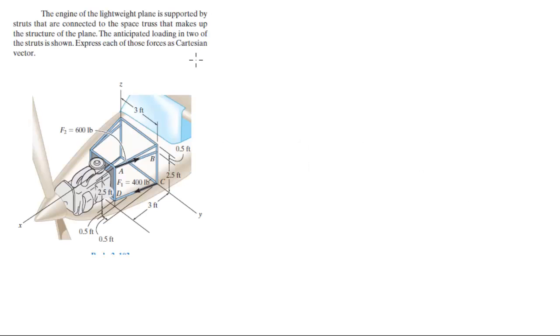For more videos visit ForTheSakeOfEducation.com. Alright guys, let's do this problem that says an engine of the lightweight plane is supported by the struts that are connected to the space truss that makes up the structure of the plane. The anticipated loading in two of the struts is shown. Express each of the forces in Cartesian vector form.